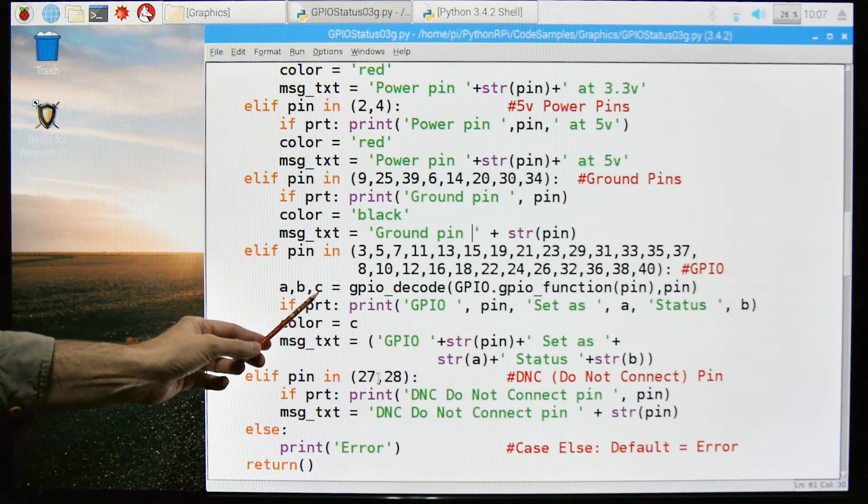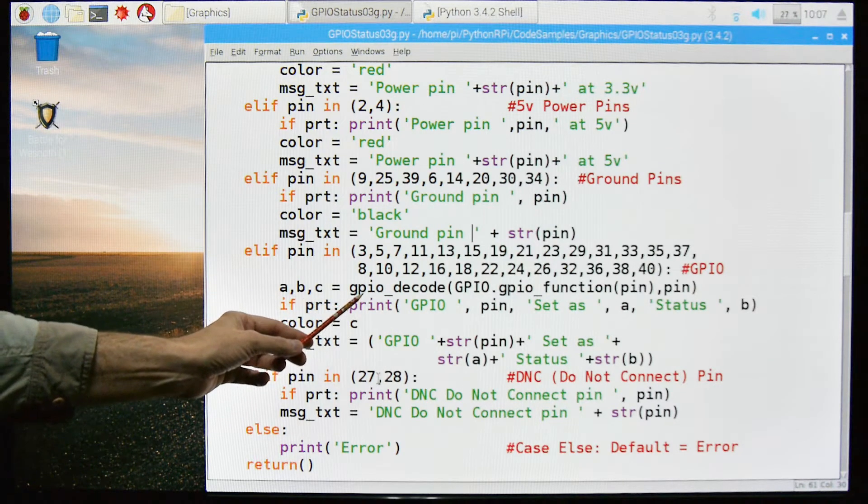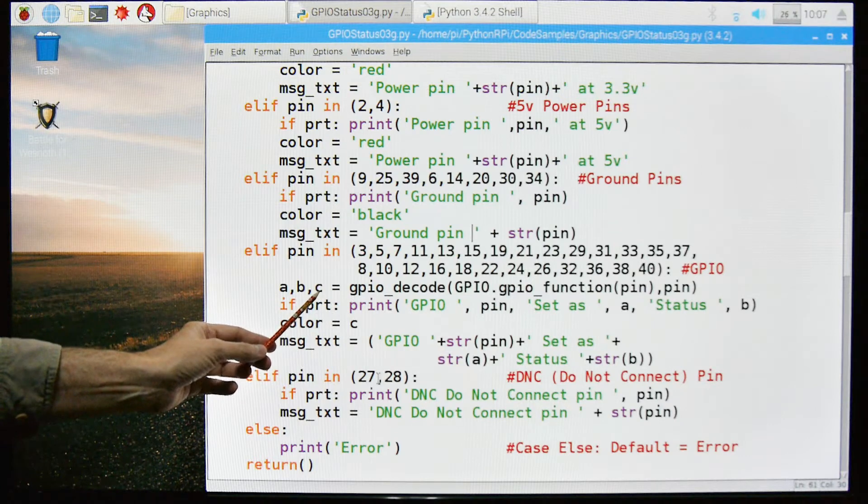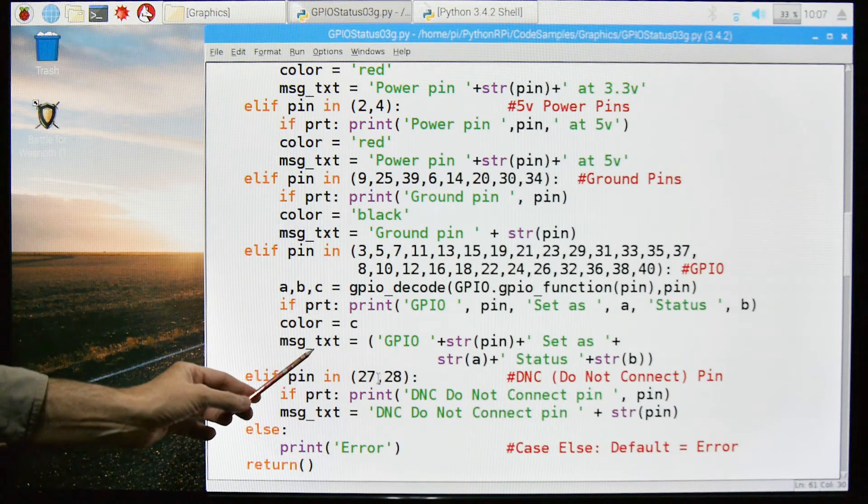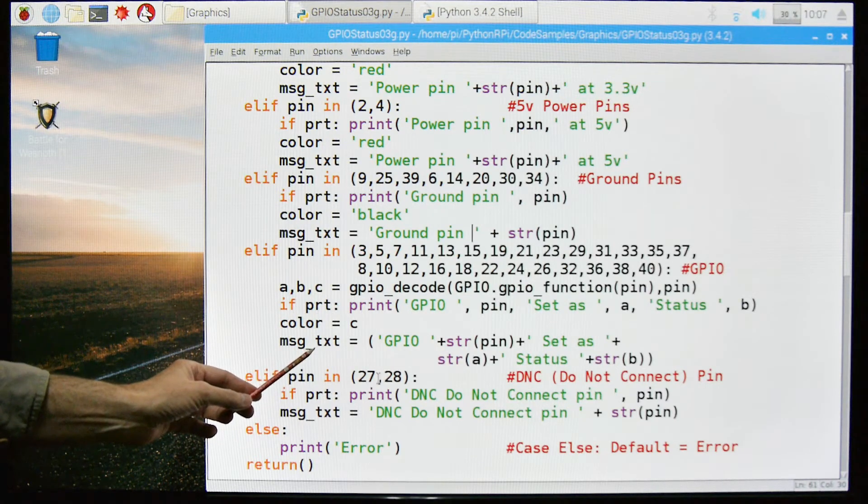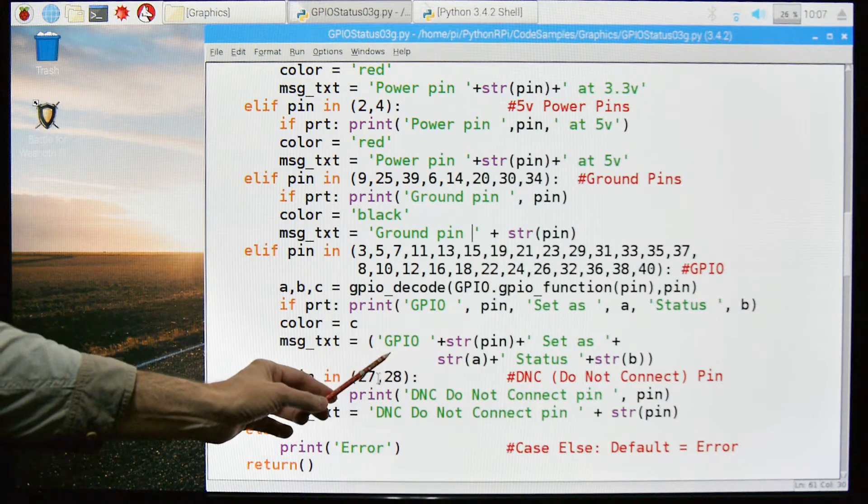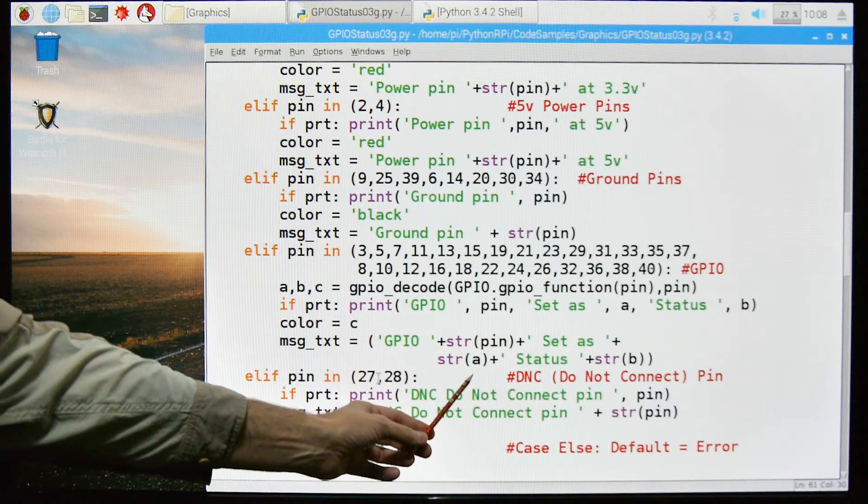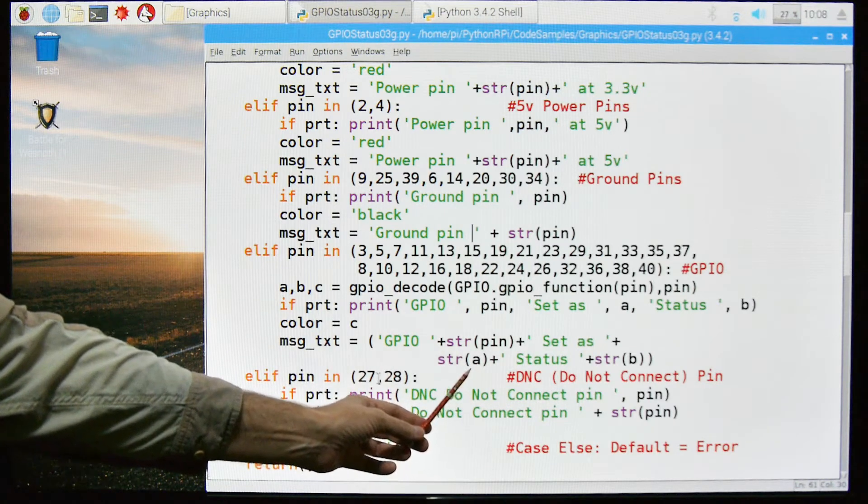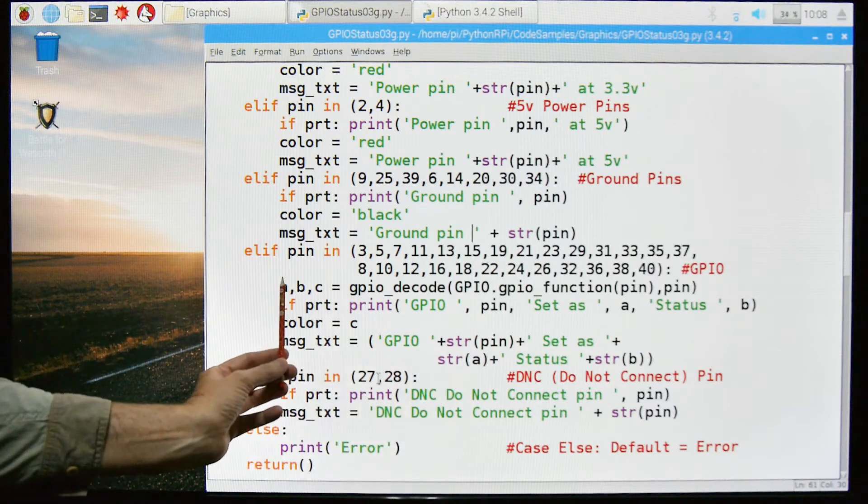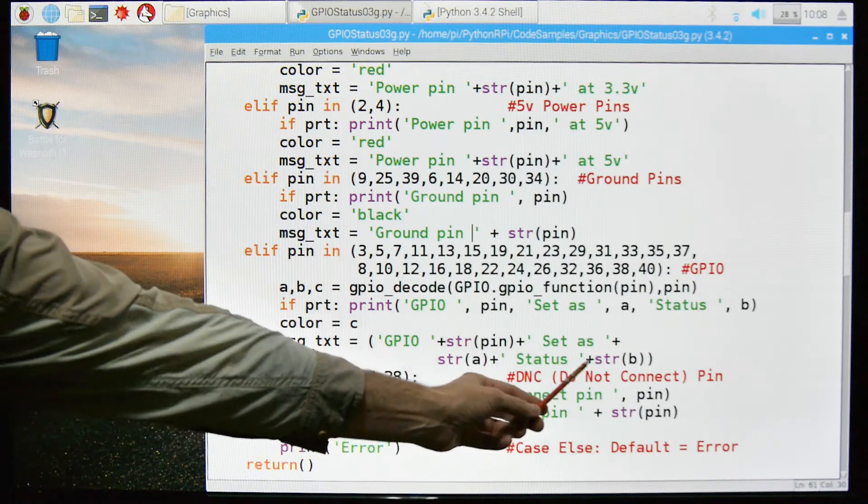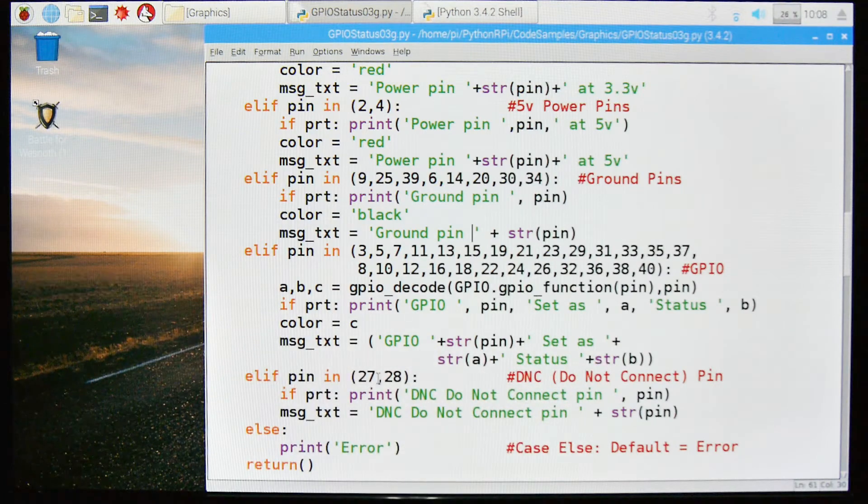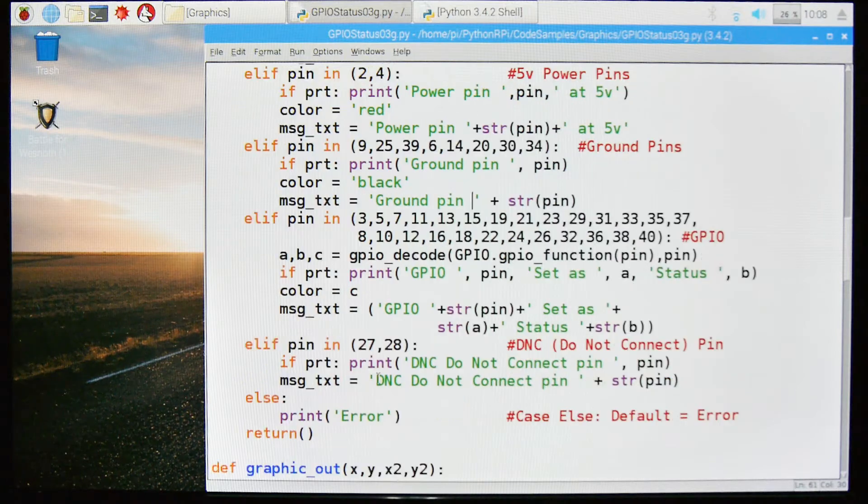We're going to set the color to C, so this function is going to return back the color in C, and we're going to set C to that. And then we're going to create a message text to pass, which is GPIO string of PIN, which is the PIN number, set as string A, so it's set as either input or output, that's what's in A, and B is the status, so is it high, low, or what have you. Let's scroll down some more.